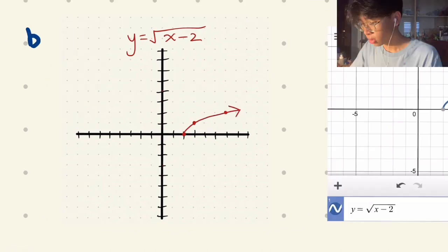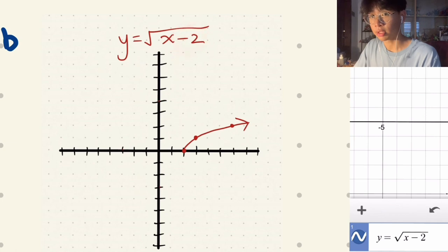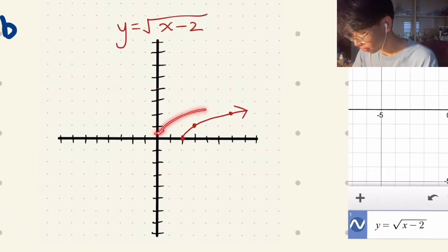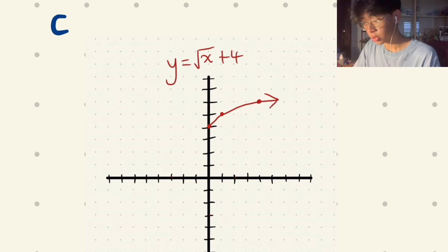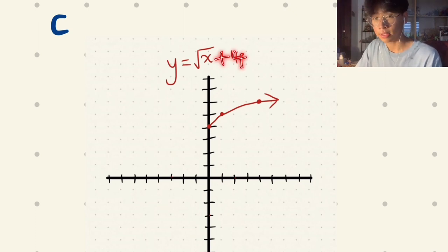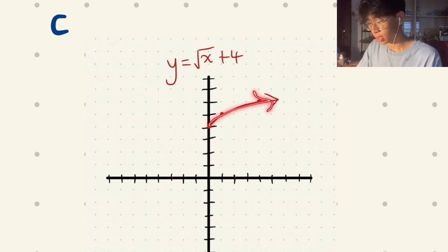For question b, y equals √(x-2): h is positive 2, so the graph moves to the right. For question c, y equals √x + 4: k equals 4 (outside the square root), so the graph moves up 4 units, and the drawing will look like that.